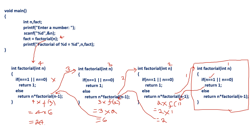That is 24. This 24 is returned to its caller. Main is the caller, and this is the point where the factorial function was called. 24 is returned to that place, so fact gets value 24. Finally, we print fact: n value is 4 and factorial value is 24. In this fashion, recursive function calls are executed.